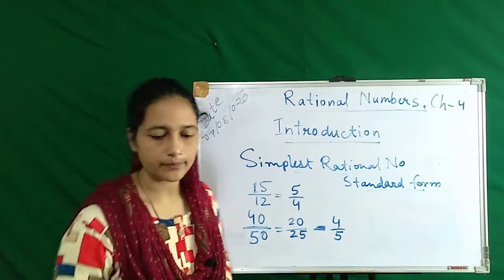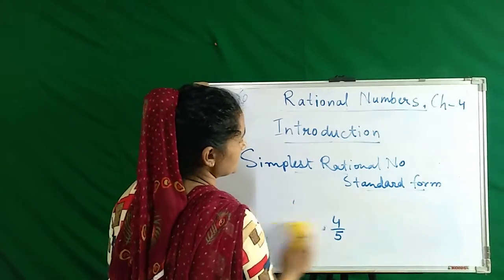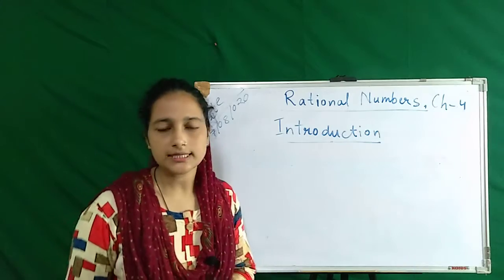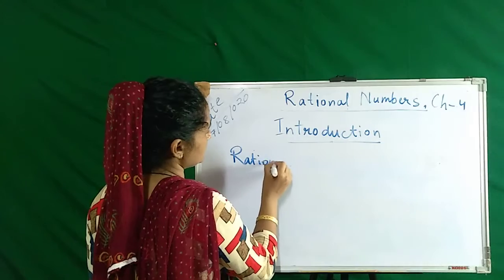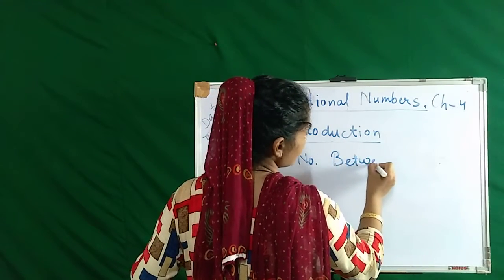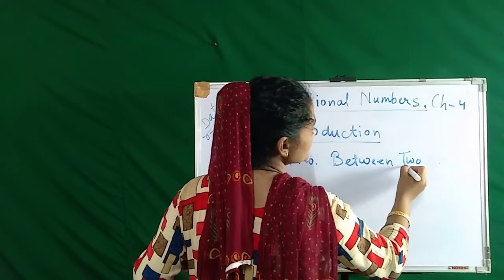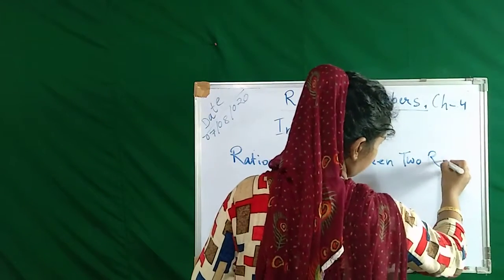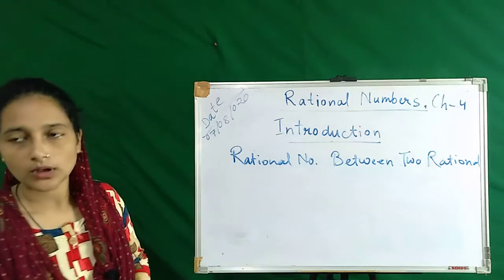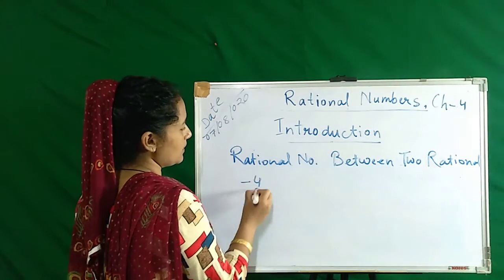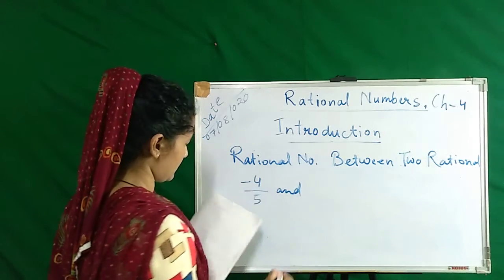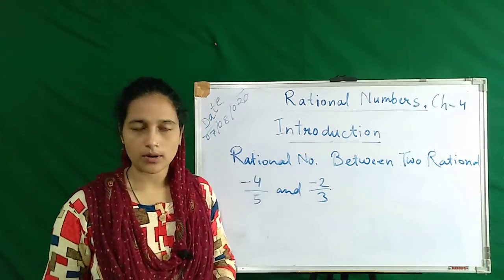Next, our next topic is rational numbers between 2 rational numbers. Now we will take negative numbers, like minus 4 by 5 and minus 2 by 3. So these are our 2 rational numbers that we have taken.